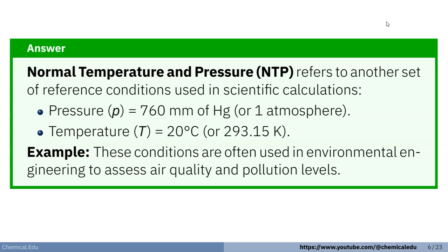Normal temperature and pressure, NTP refers to another set of reference conditions used in scientific calculations. Pressure is 760 mmHg or 1 atmosphere. Temperature T is 20 degree centigrade or 293.15 Kelvin. What is the use of that? This condition are often used in environmental engineering to assess air quality and pollution level.